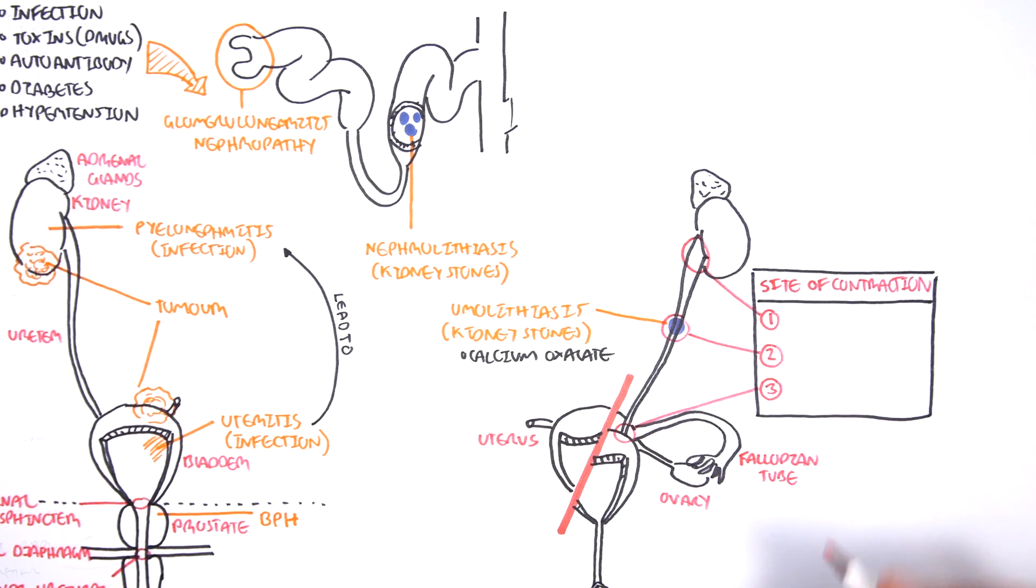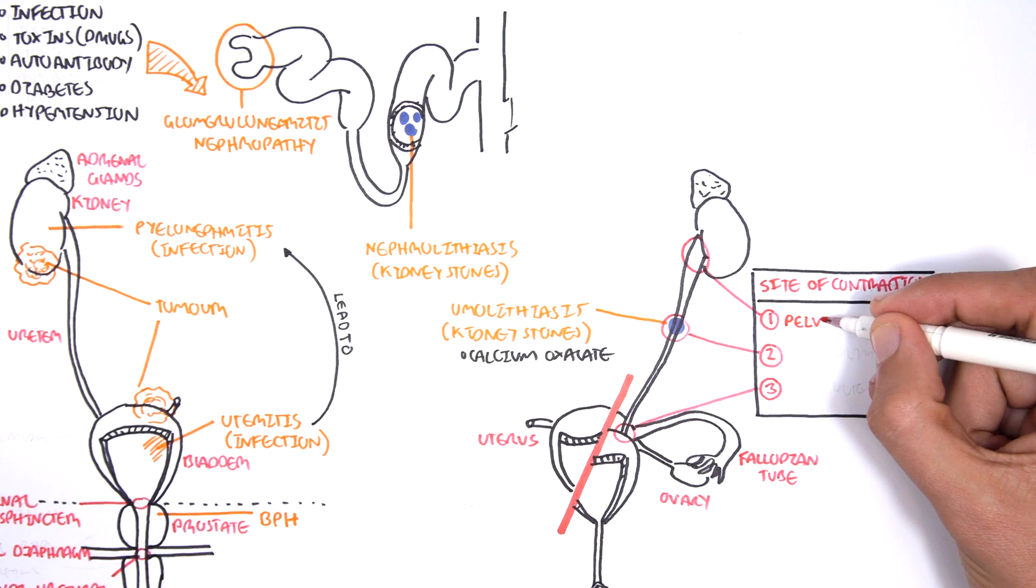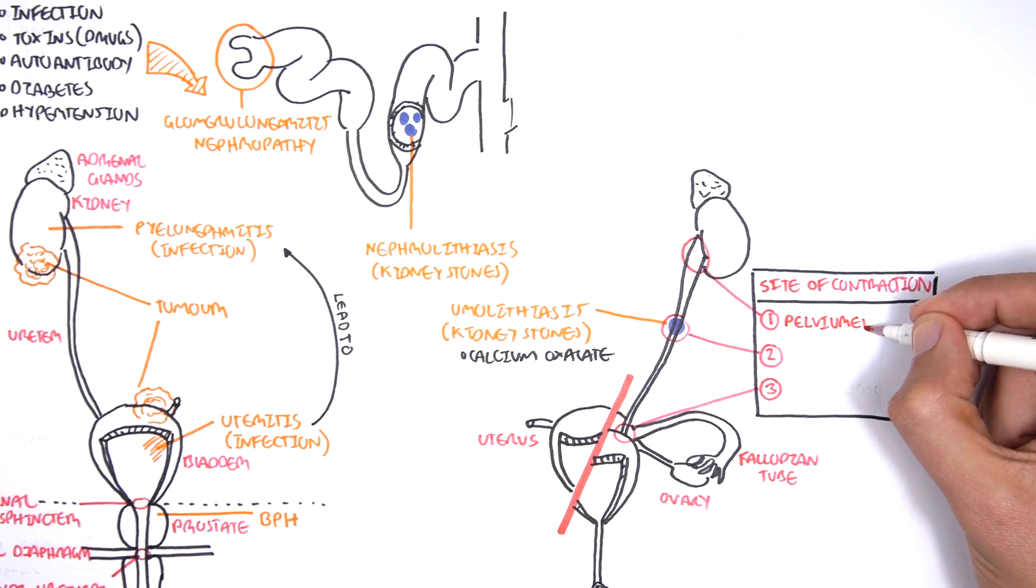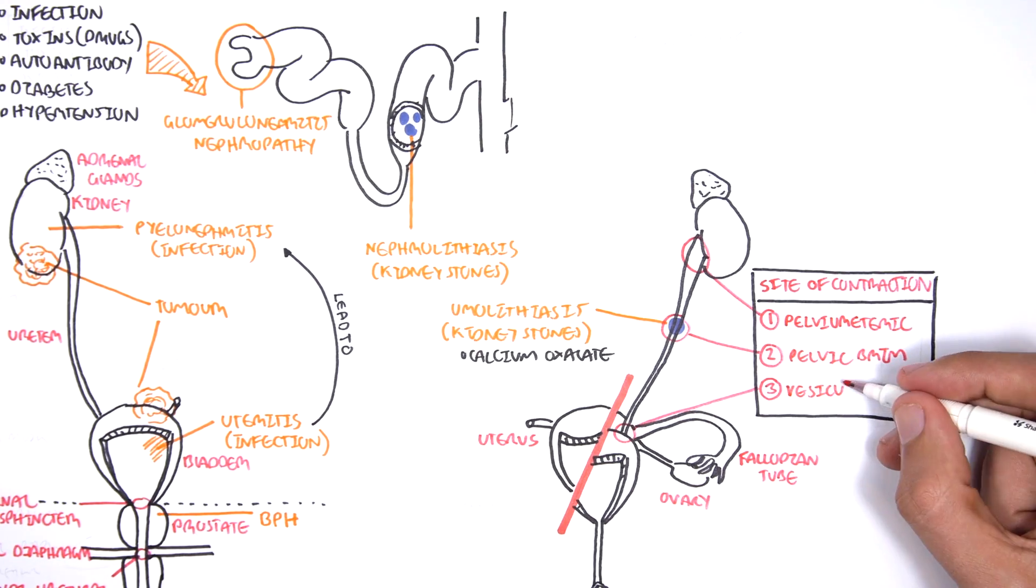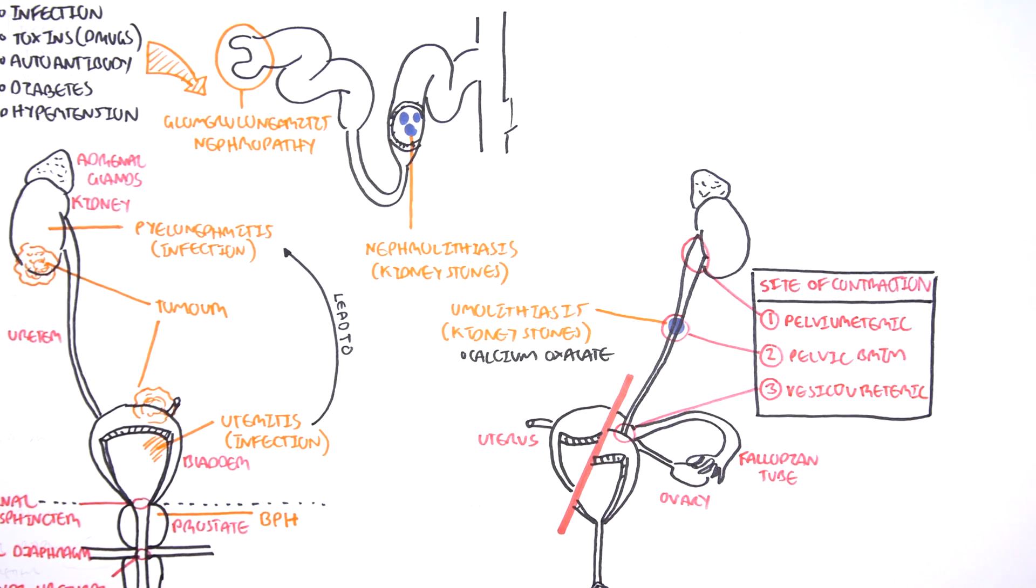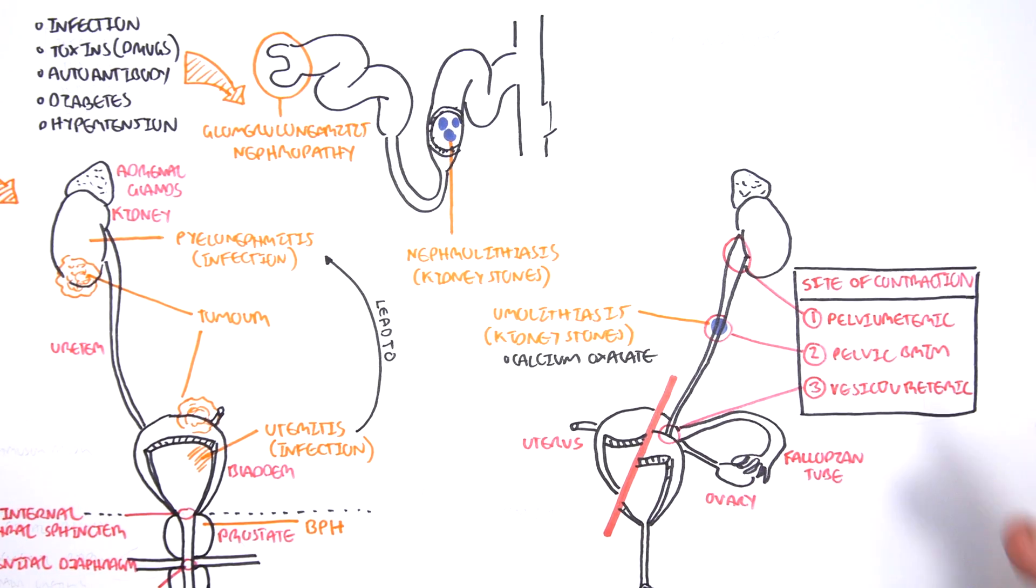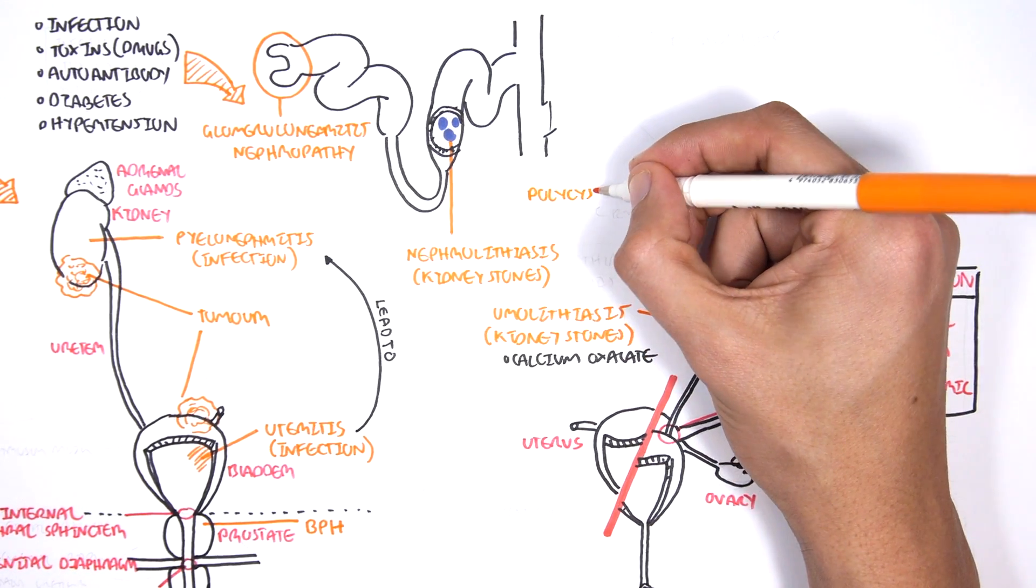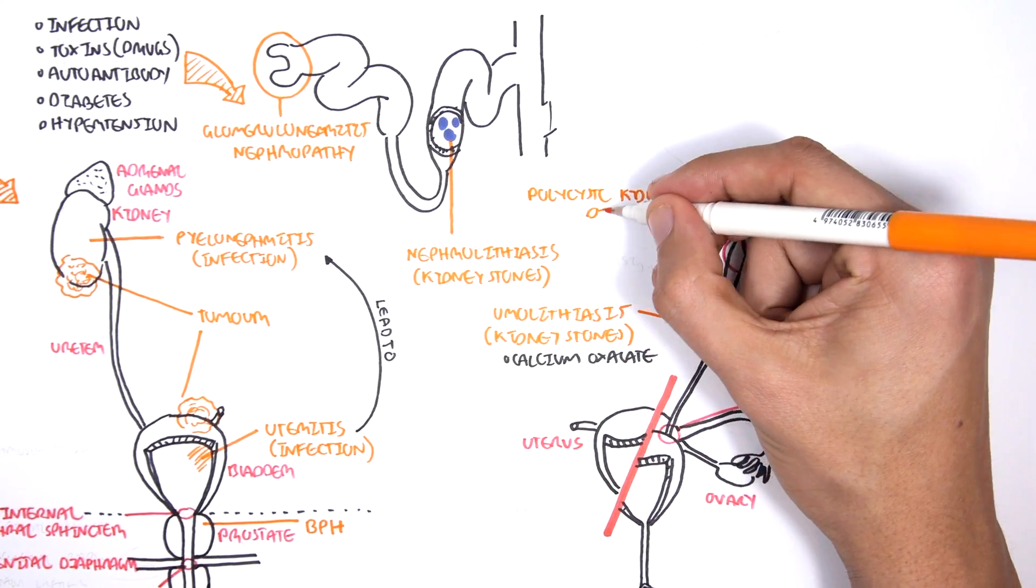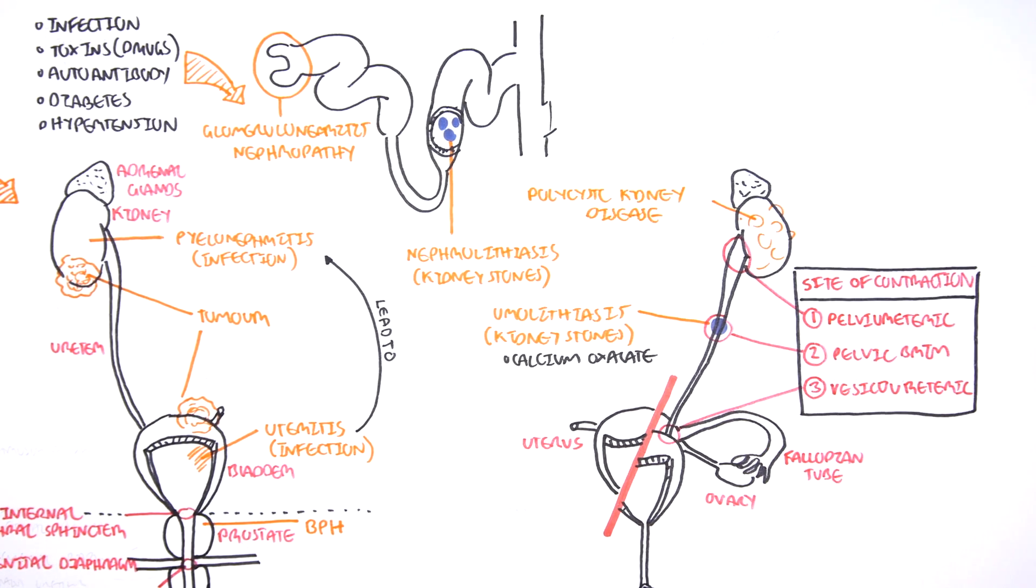The beginning part is known as the pelviureteric junction. Then the middle part is the pelvic brim. The third part, where the ureter enters the urinary bladder, is the vesicoureteric junction. Another differential diagnosis for hematuria is a genetic disorder known as polycystic kidney disease. This disease forms cysts around the kidneys which could result in blood upon urination.